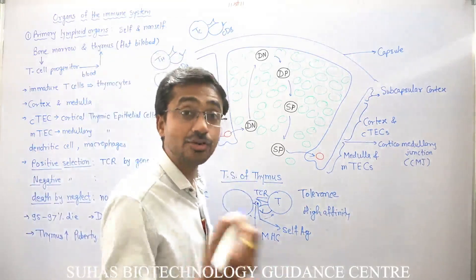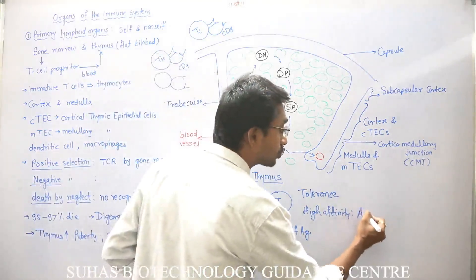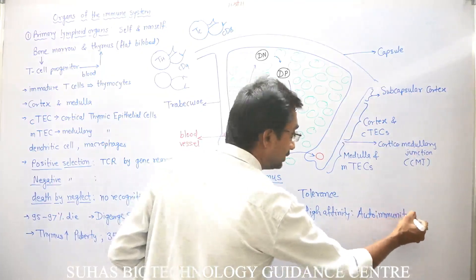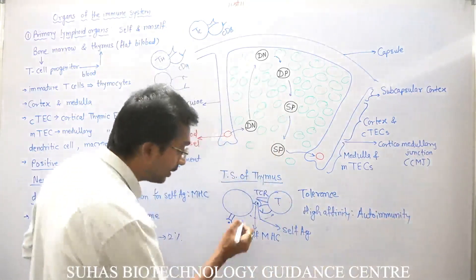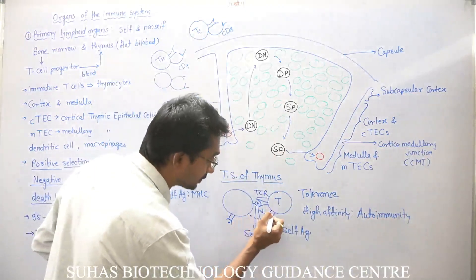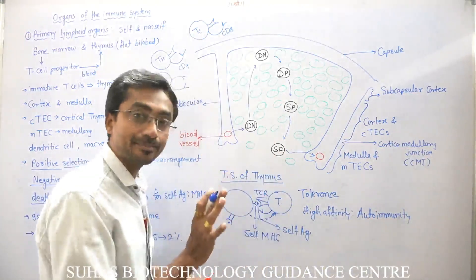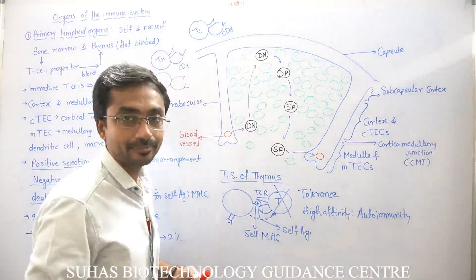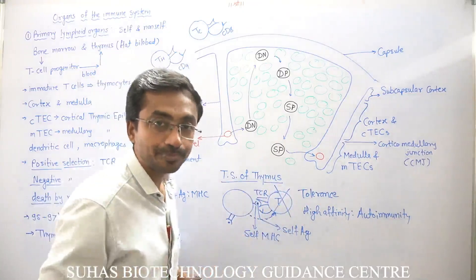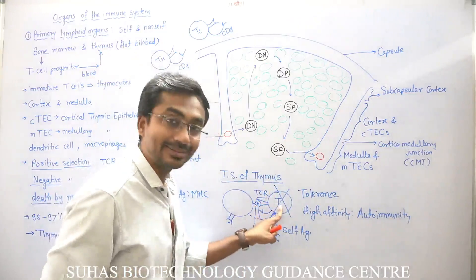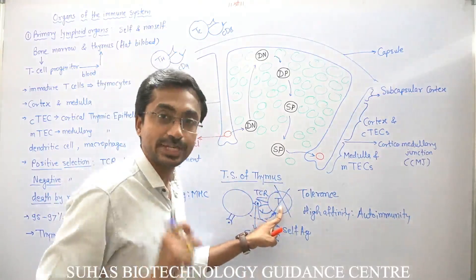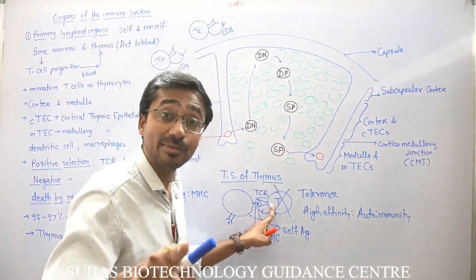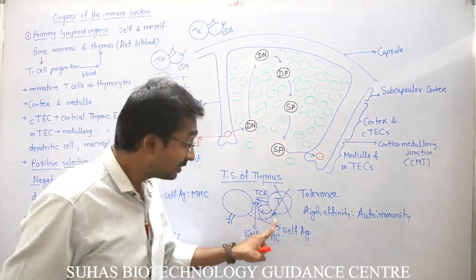If such T-lymphocytes survive and go into the body, they will generate the problem of autoimmunity. To stop this, such T-lymphocytes are immediately induced to die through apoptosis, and such T-lymphocytes are immediately killed. This type of selection is called negative selection.